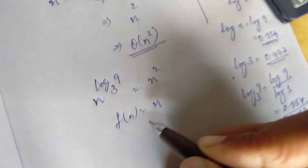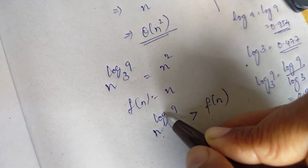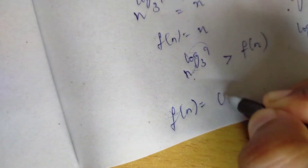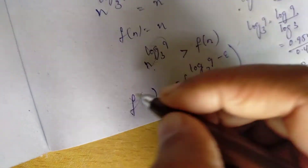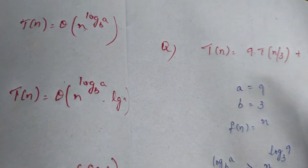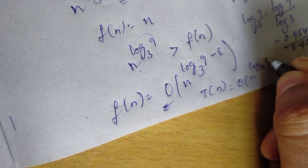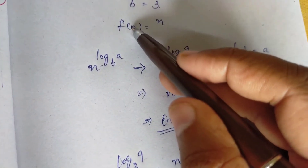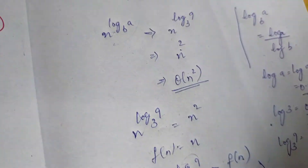f of n is n. So, n power log 9 base 3 is greater than f of n. We have to confirm that the condition is our first condition: f of n equals O(n^(log₃9 − ε)). That is our first condition, so t of n equals theta of n^(log₃9), which is theta of n squared.